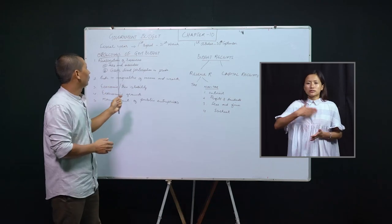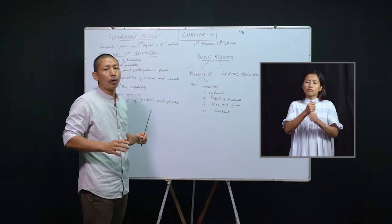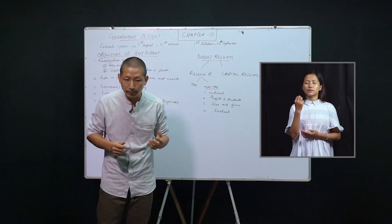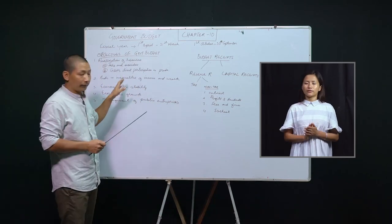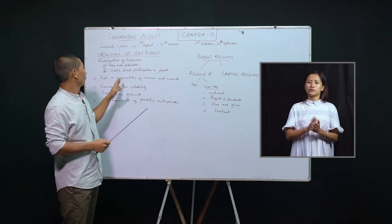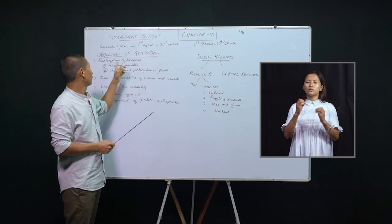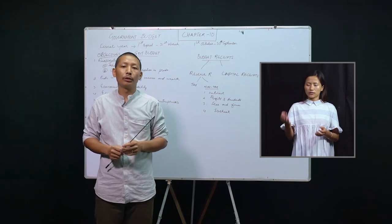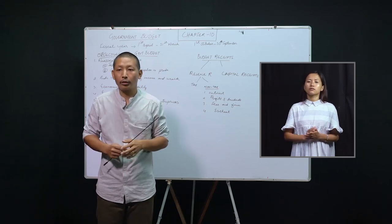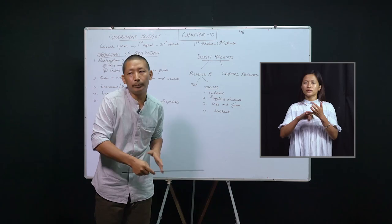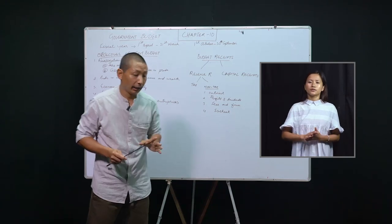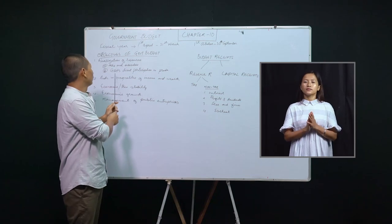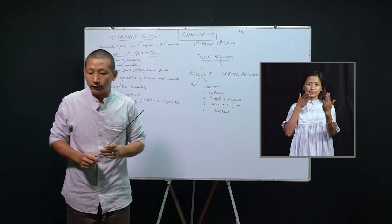Now let us discuss the objectives of government budget. When you go to higher classes, you will have to go through many pages on this. But luckily, in class 12, they have identified the five most important ones. The first objective of government budget is reallocation of resources. The government always has to come up with new ideas to reallocate their resources so that social and economic justice is ensured to all people. To achieve this, there are two important measures: number one, taxes and subsidies; and number two, government's direct participation in production activities.